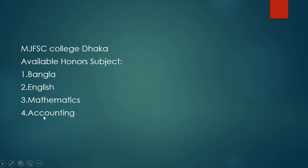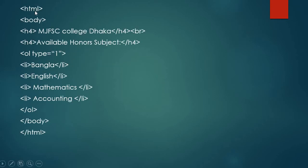নম্বর ওয়ান বাংলা, নম্বর টু ইংলিশ, নম্বর থ্রি ম্যাথমেটিক্স, নম্বর ফোর একাউন্টিং। এখানে এগুলো হচ্ছে একেকটা সাবজেক্টকে ওয়ান টু তিন দিয়ে সাজানো হয়েছে। এখন আমরা এটার কথা দেখবো — কিভাবে করলাম প্রথমে এস্টেমেল দিয়ে শুরু করলাম, তারপর হচ্ছে বডি।